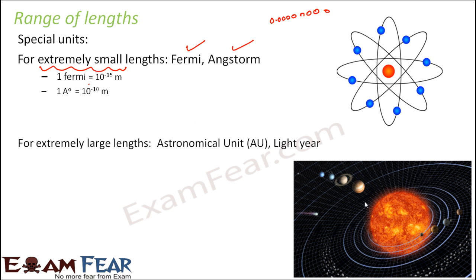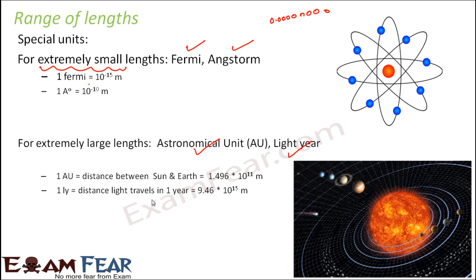At the other extreme, there are lengths that are extremely large — for example, the distance between two planets, or the distance between the sun and the earth. These distances are enormous, so kilometer becomes a very tiny unit for them. Here we use bigger units like astronomical unit and light year. One astronomical unit is the distance between the sun and the earth, equal to 1.5 × 10 to the power 11 meters. One light year is the distance that light travels in one year, which is 9 × 10 to the power 15 meters. So lengths can be very small or very large, and special units exist to handle both extremes.